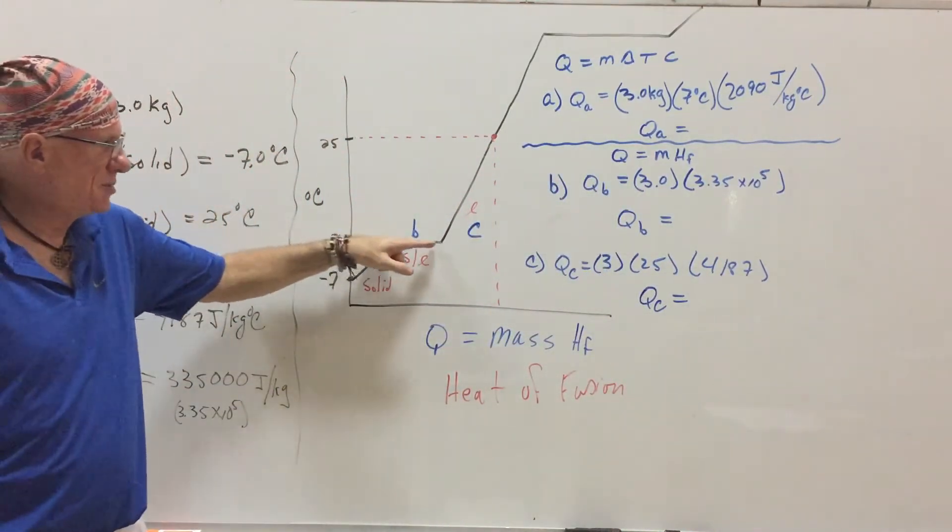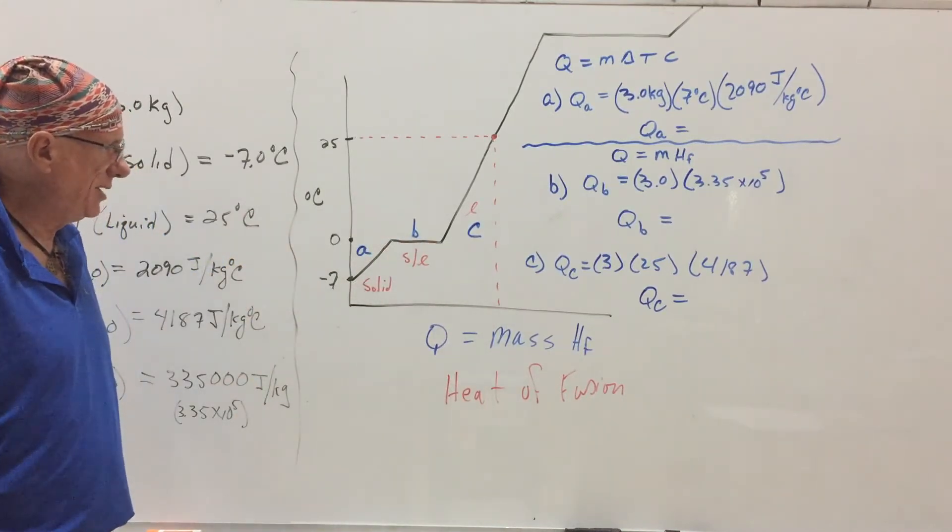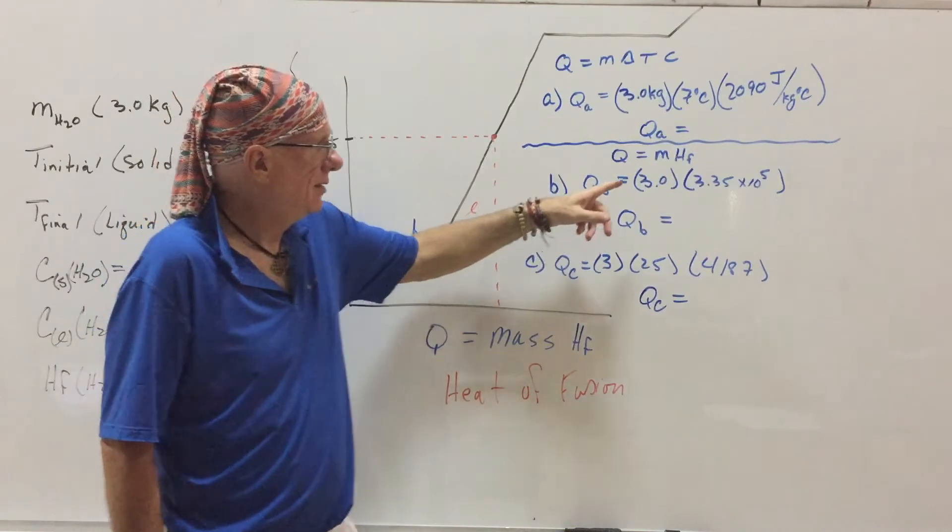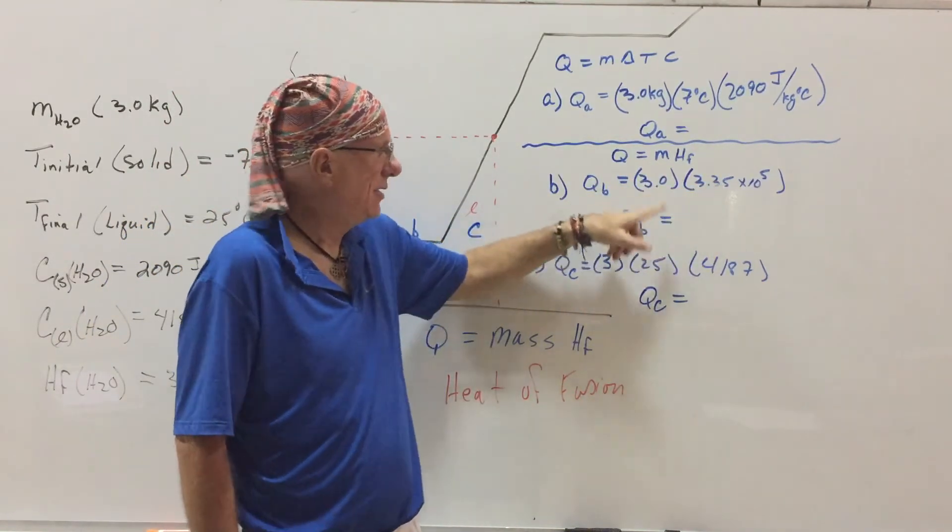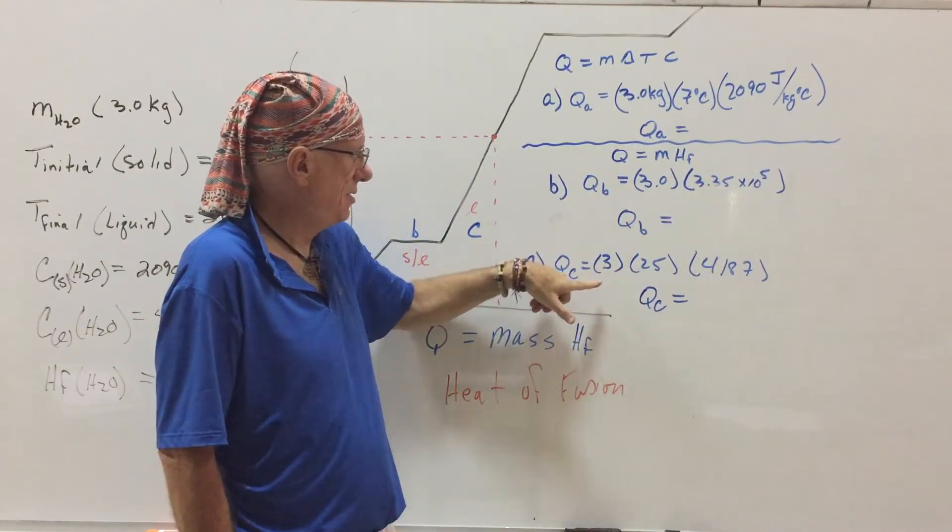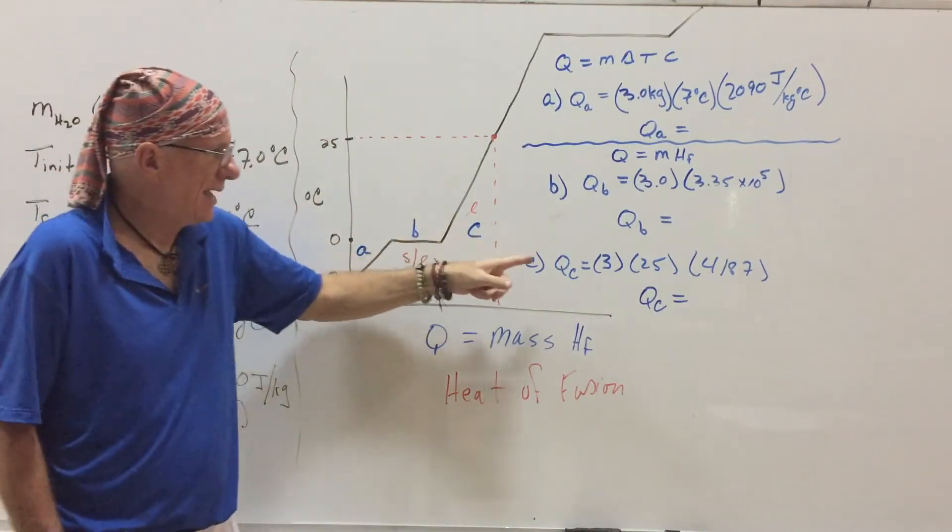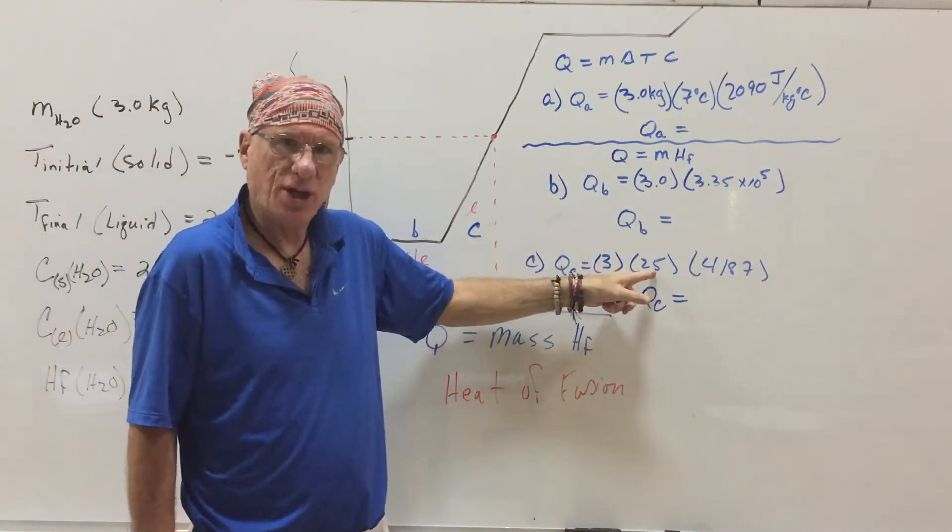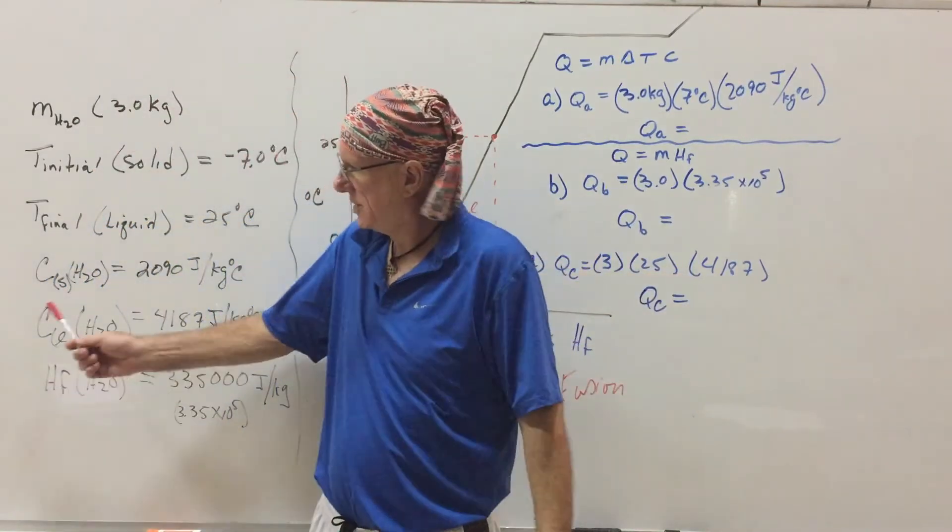B is going to be this potential energy we call the heat of fusion, and that's going to be simply the mass times the heat of fusion. I left off the unit labels. And then C is going to be the mass times the temperature change. It goes from zero to 25, and then the specific heat capacity is here. It has to be given.